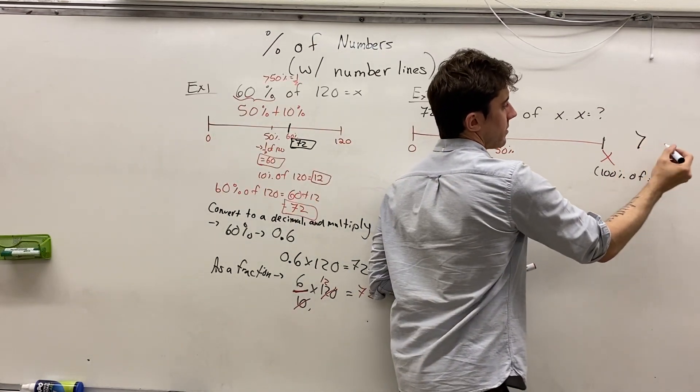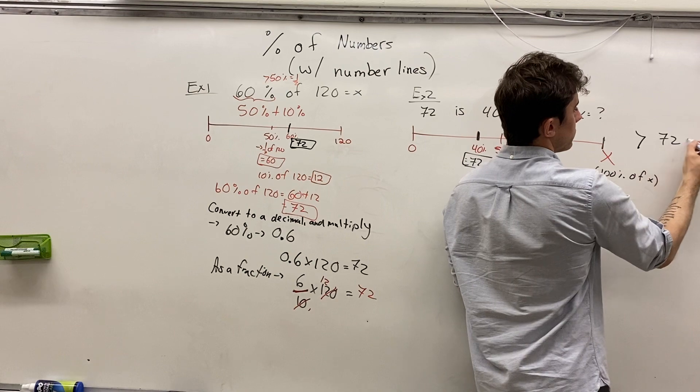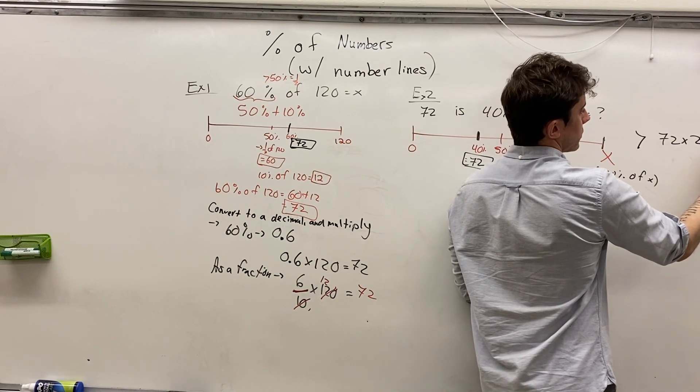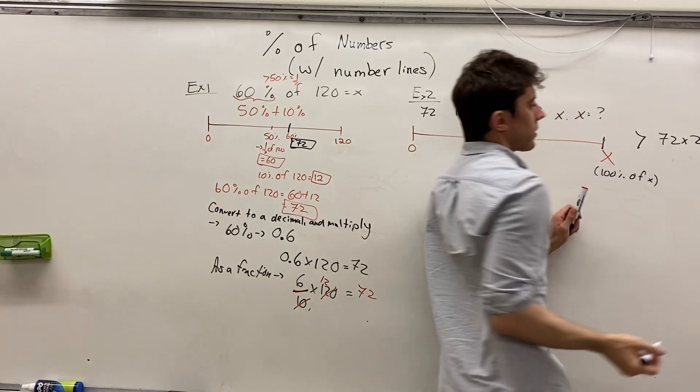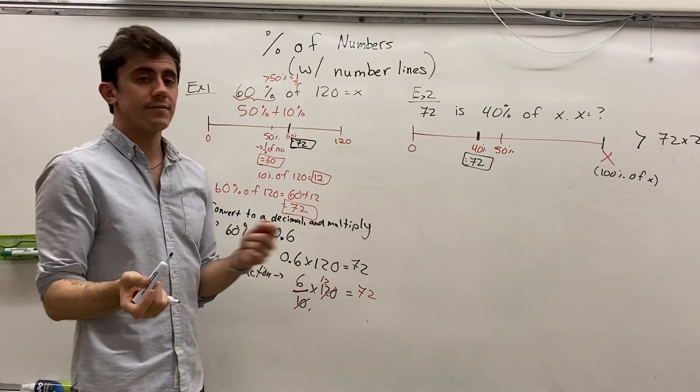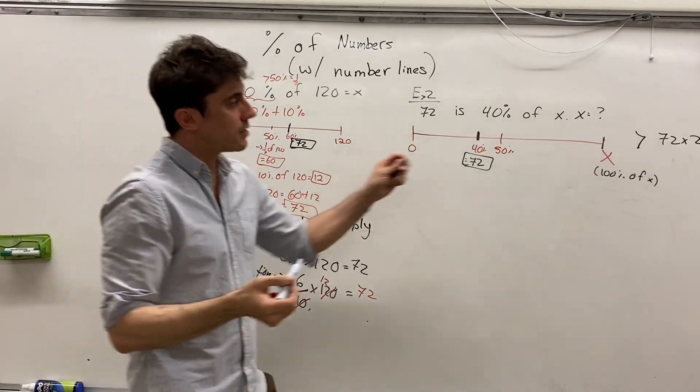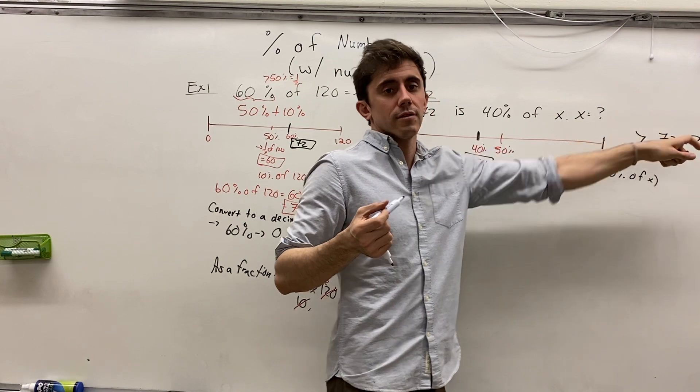So 72 is not even half of x. That means x has to be more than double 72, which in fact is 144. So now we have some constraints on our values of x. We know that x has to be greater than 144.